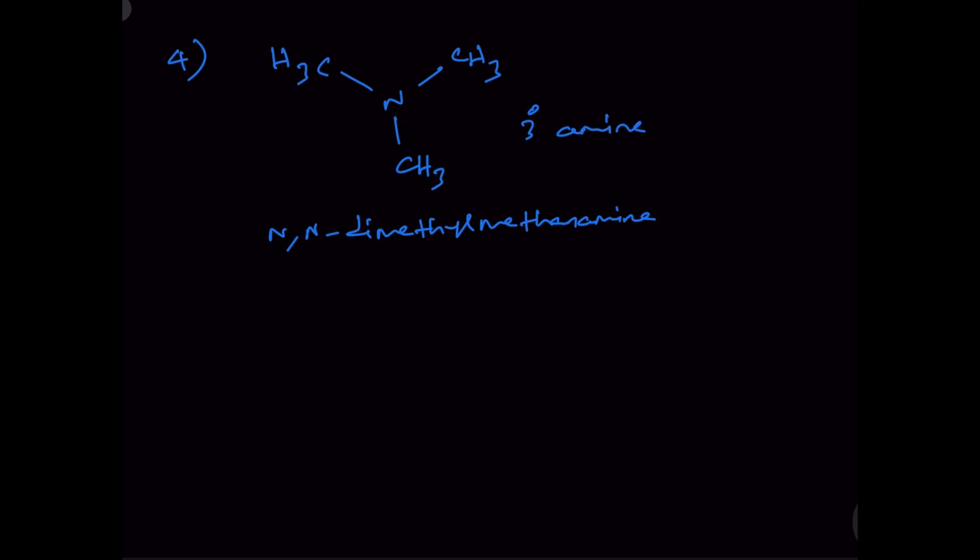The nitrogen atom is connected to three different carbon atoms, and therefore this is a tertiary amine. So in total, four isomers are possible for C3H9N.